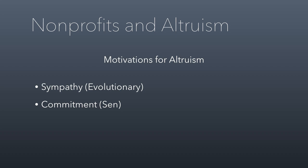Another motivation is commitment, put forth by Nobel Prize-winning economist Amartya Sen. He argued that a lot of altruism is motivated by promises — commitments that sometimes come at a personal cost, but we honor them because that's the nature of a promise. A more cynical perspective comes from economist Sugden: the 'keeping up' motivation, where altruism is about signaling to the world what kind of person you are. If everybody in your neighborhood donates $20 to a charity, you'd feel silly donating less. We'll discuss all these concepts more in class.